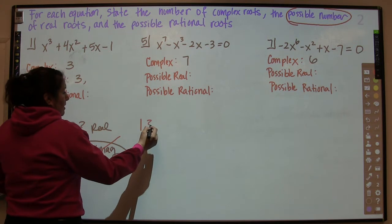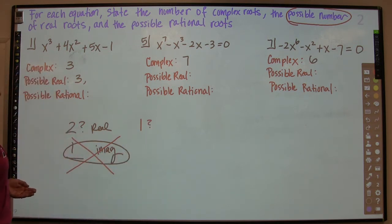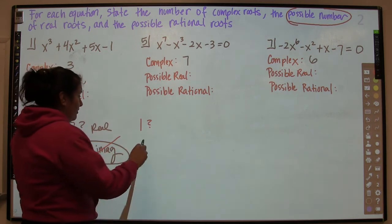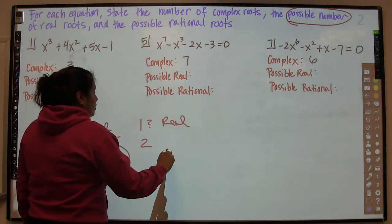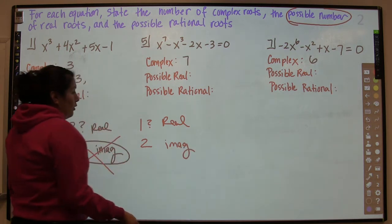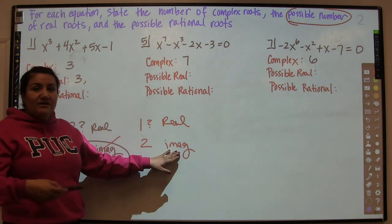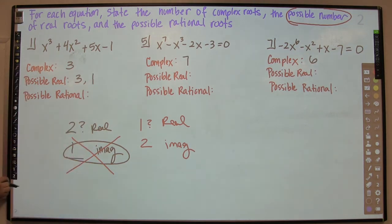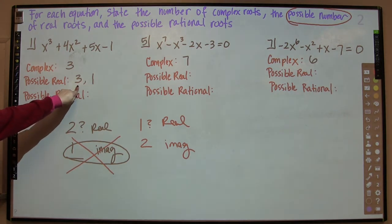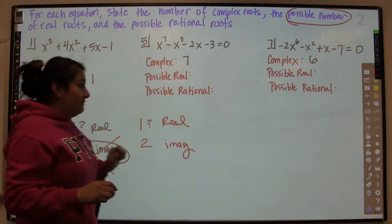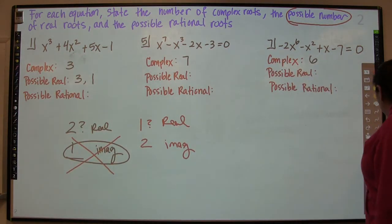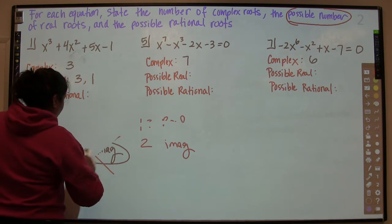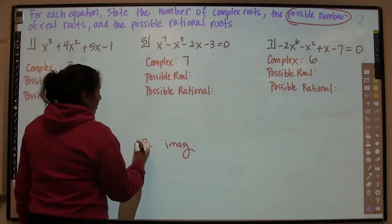So two real is not possible. What about one real? If you have one real root, then you would have two imaginary. Is that okay? Yes — it is totally okay to have two imaginary roots because they come in pairs. So for the degree-three example, the possible reals are actually two answers: it's possible to have three real, or it's possible to have one real. But it's not possible to have two real.